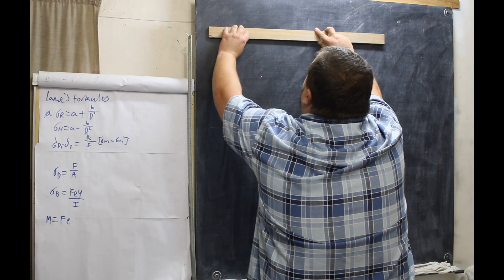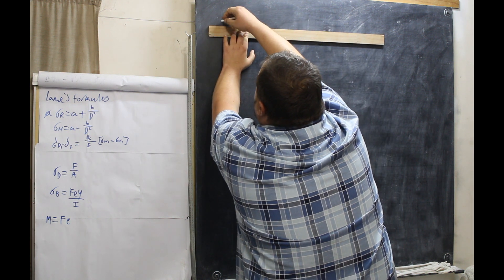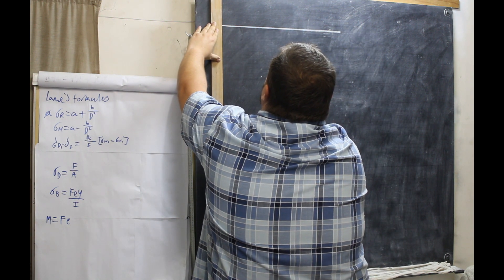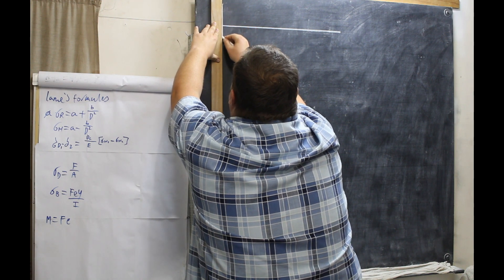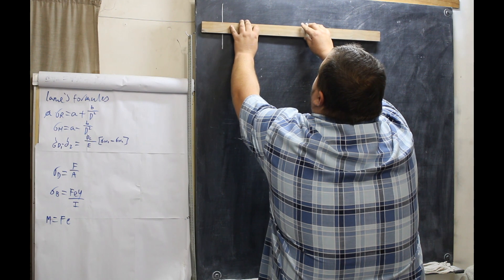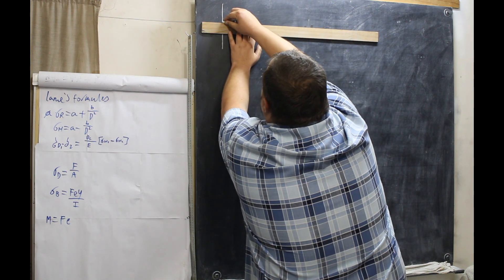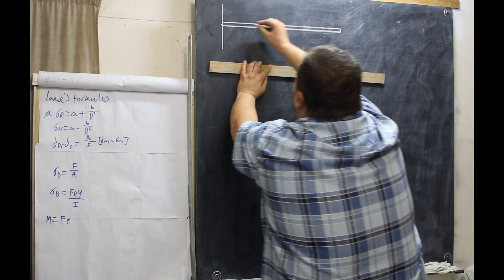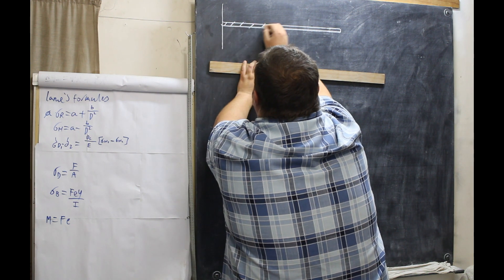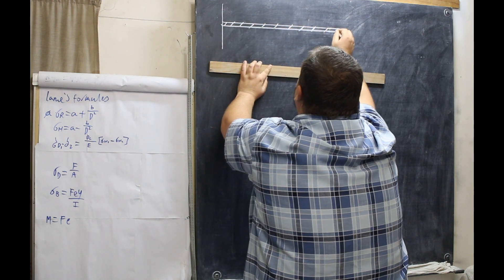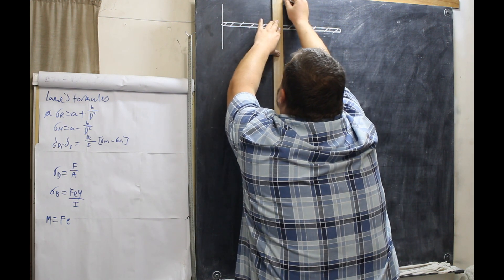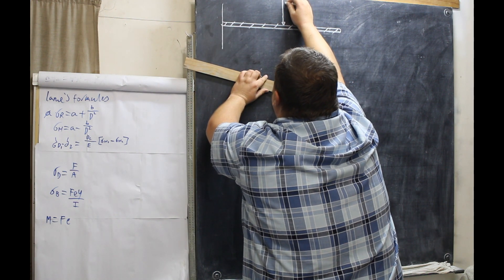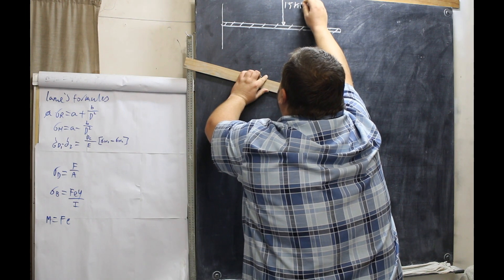Our cantilever looks something like this. A cantilever is always fixed at one end. So there's the wall. So here's our cantilever. And this is our UDL. Our UDL is over the full length, and then halfway across it is a point load of 15 kilonewtons.